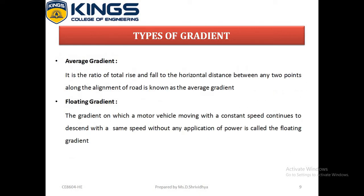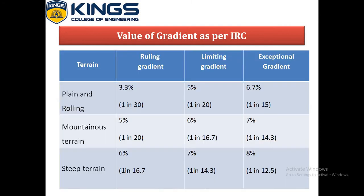Average gradient is the ratio of total rise or fall to the horizontal distance between any two points along the alignment of the road. Floating gradient is the gradient on which a motor vehicle moving at constant speed continues to descend with the same speed without any application of power.